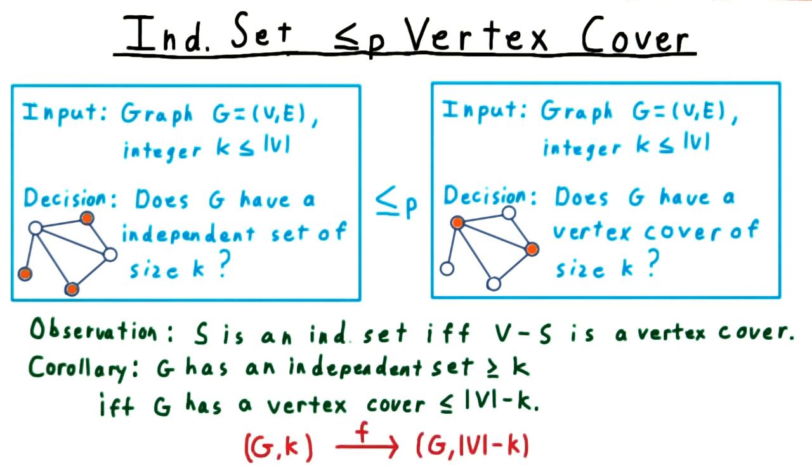The reduction then is fantastically simple. Given a graph G and a number K, the reduction just keeps the same graph G and changes K to the number of vertices minus K.